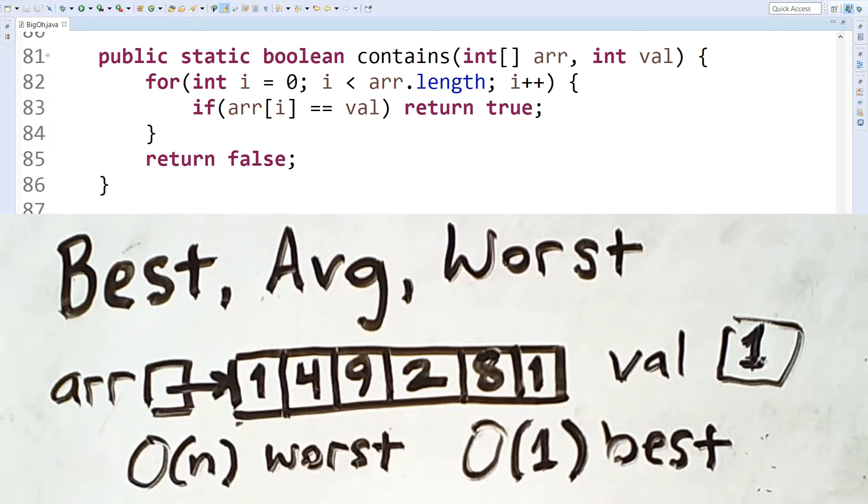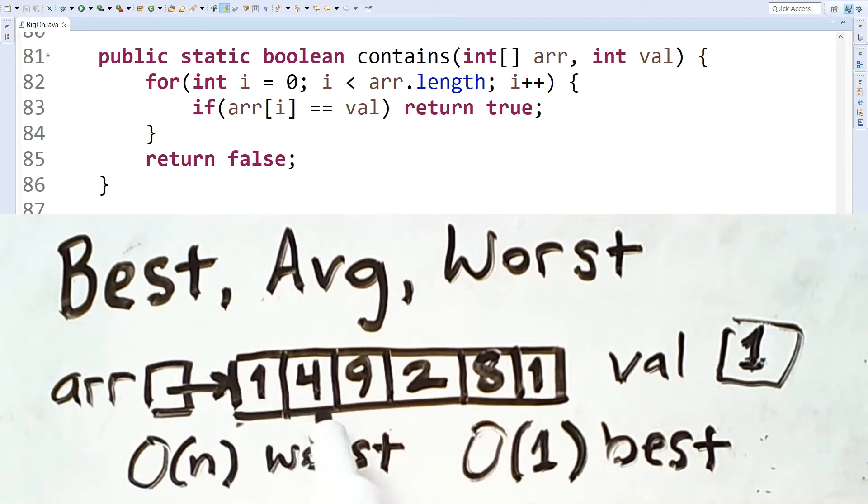Then, there are a whole range of possibilities that stop at points in between. If we search for 4, we'll check 2 values. If we search for 9, we'll check 3 values. If we search for 8, we'll go to this point. And then, there are many values that we could search for that are not present, and therefore require us to search the whole array.